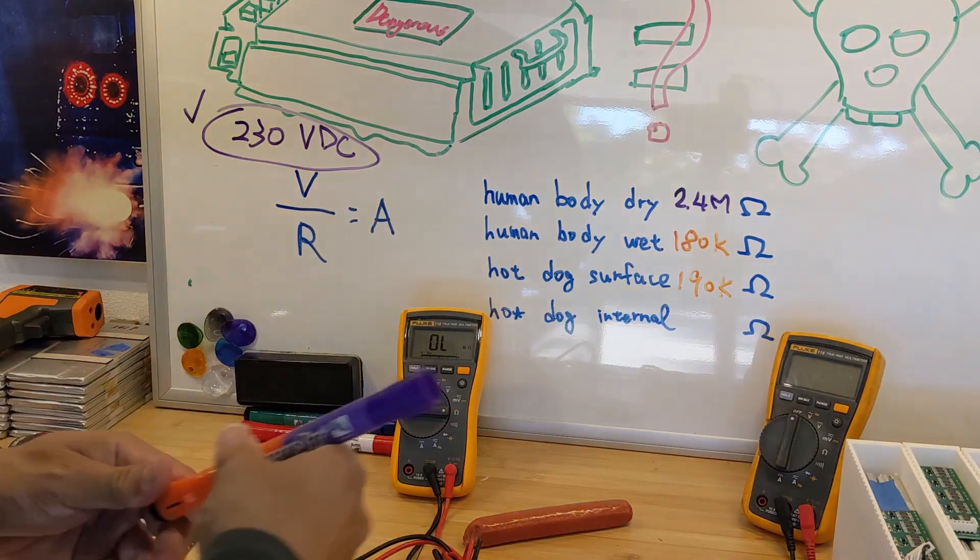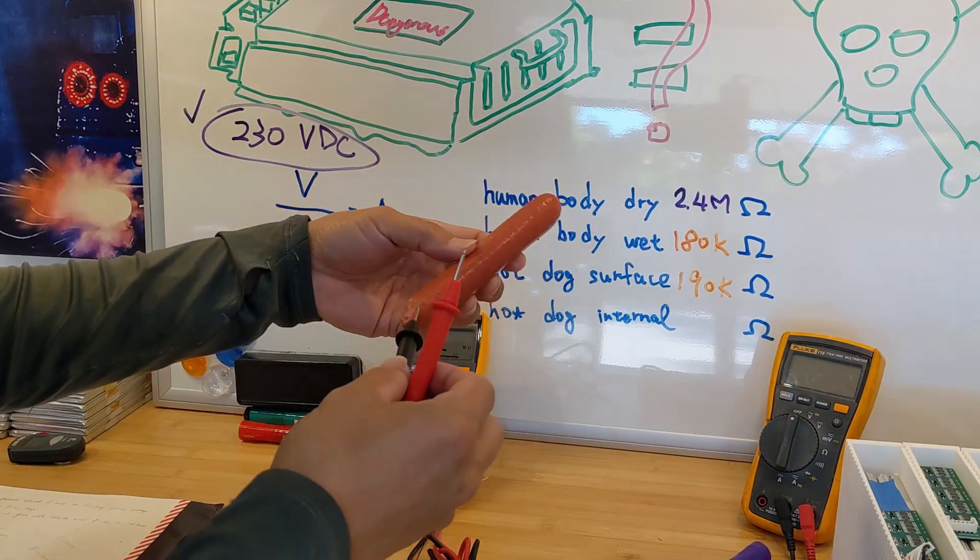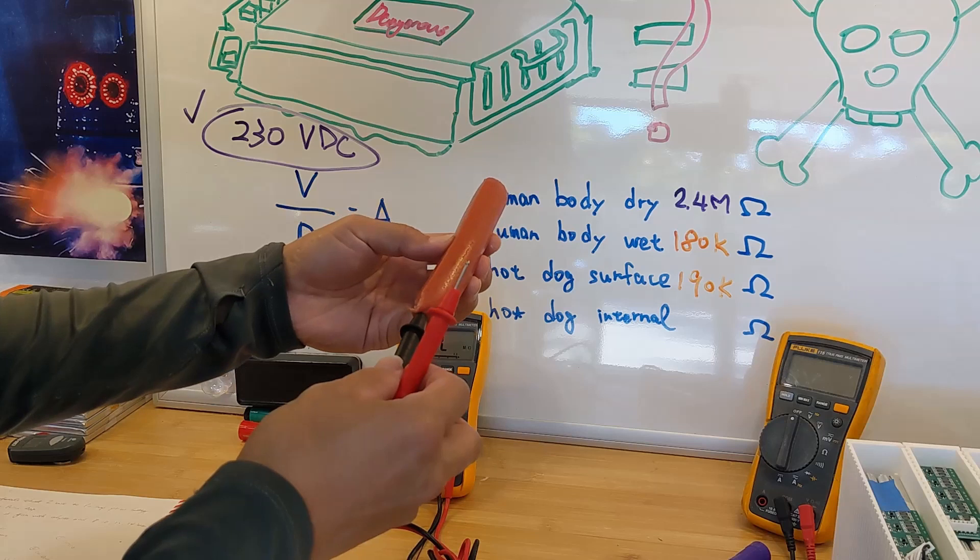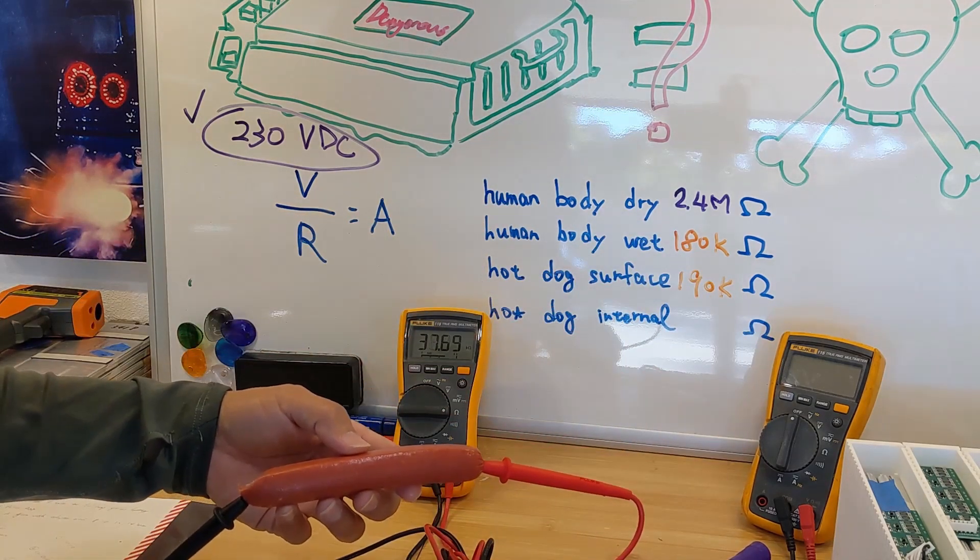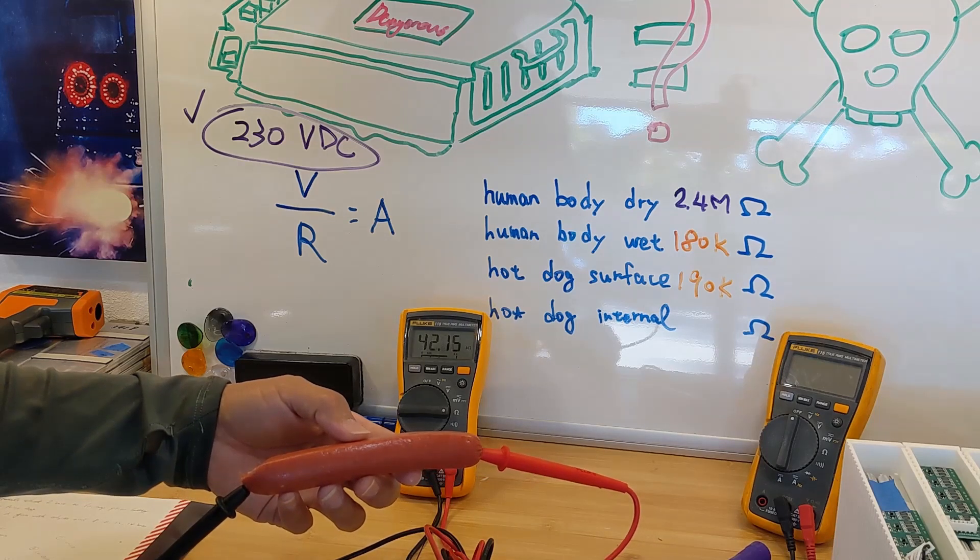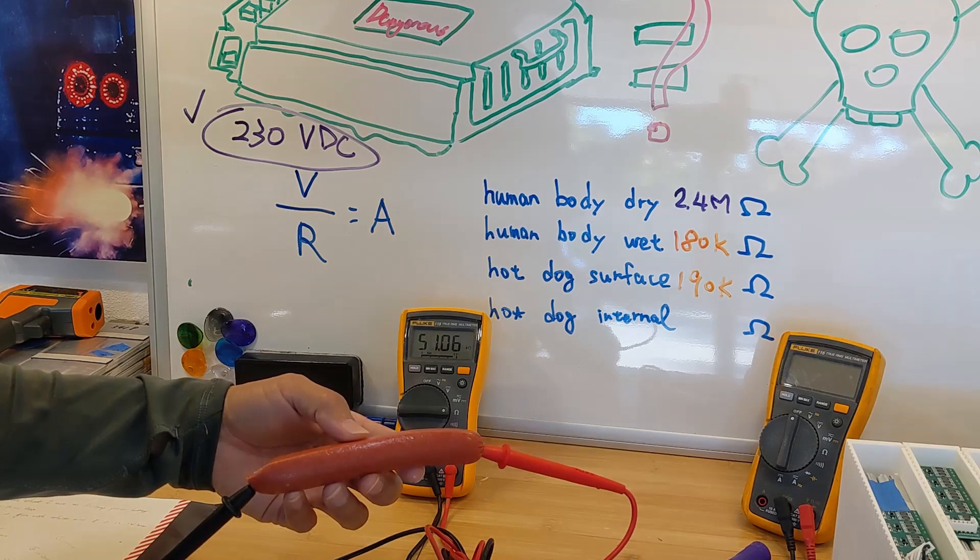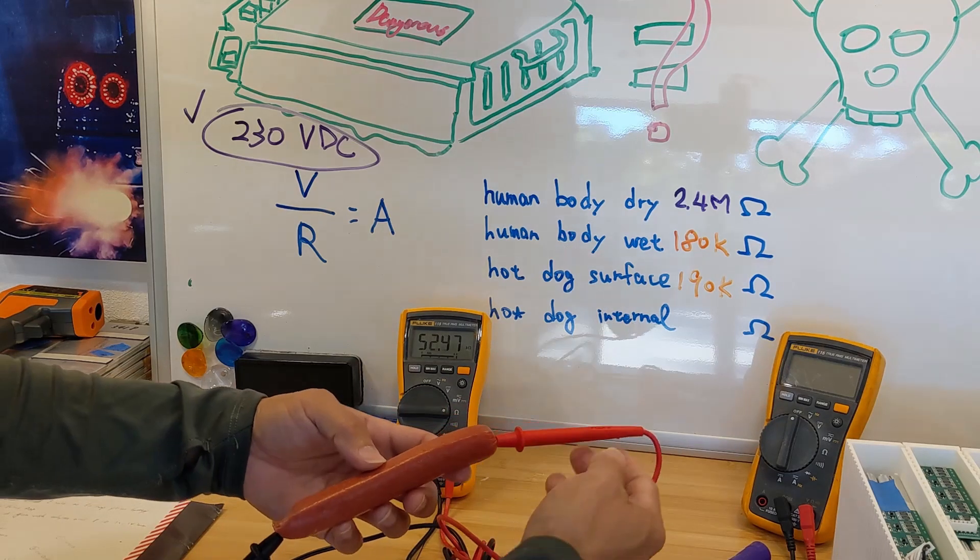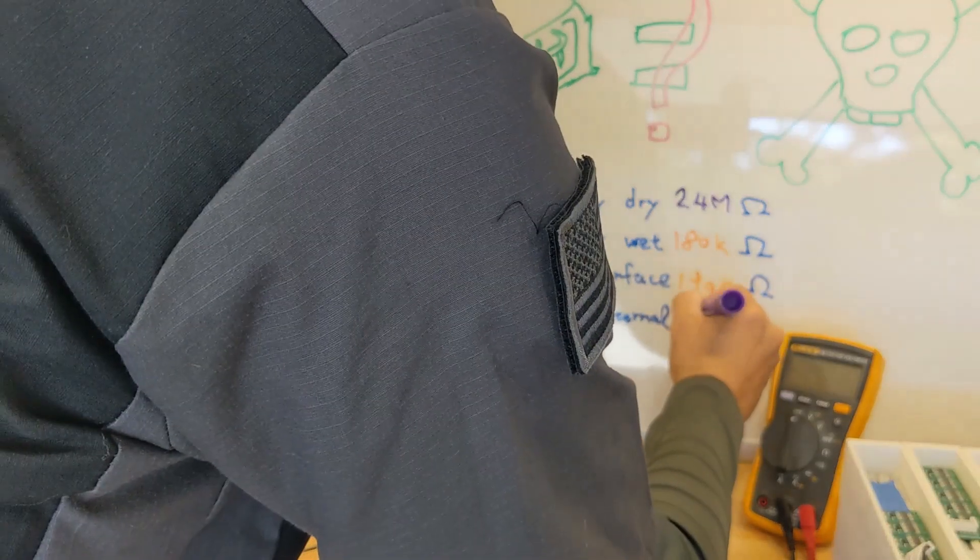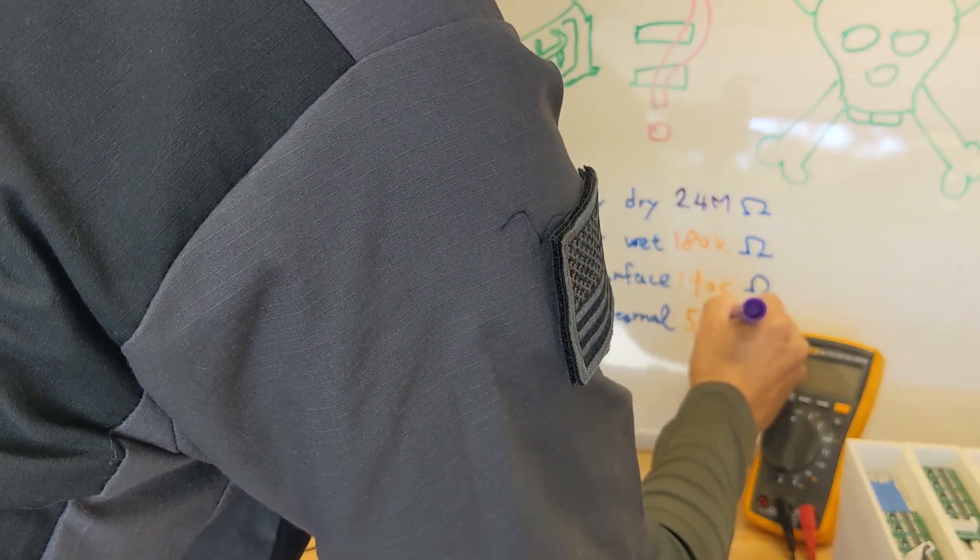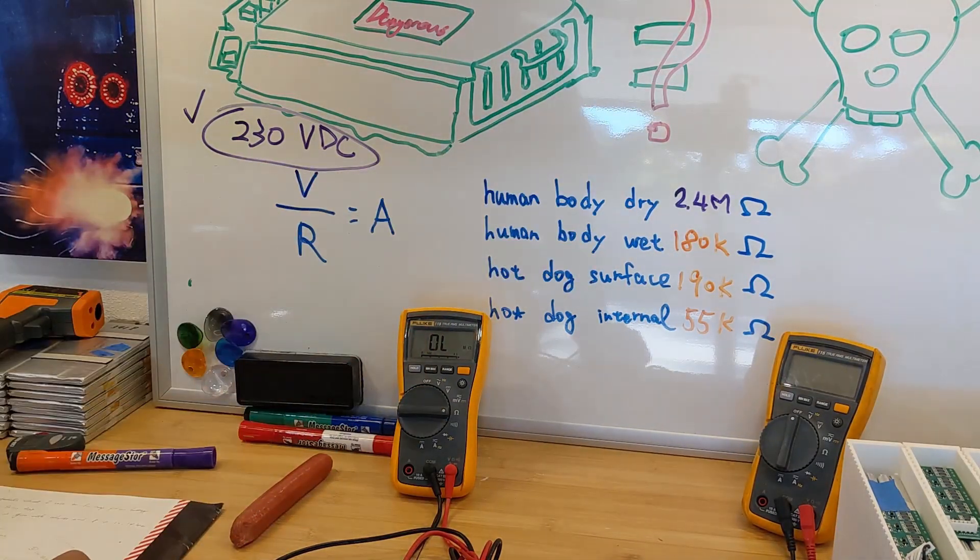And now let's try to simulate the worst case scenario where the positive and negative actually penetrate into your skin. Look at that. Now you're looking at - settle it down - let's just use 55k ohm.